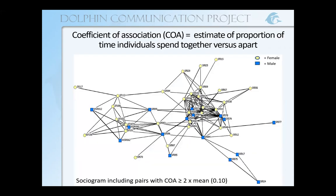Here is an example of one of our social networks measured with our coefficients of association. In this network, I'm only showing pairs that have a COA of at least 0.2 or greater. Females are represented with yellow circles and males are blue squares, and they are plotted so that dolphins with a higher number of associates with stronger connections are more central and closer to each other.